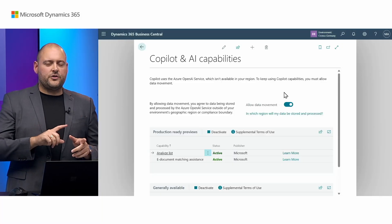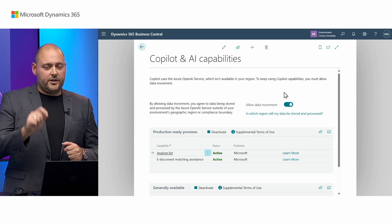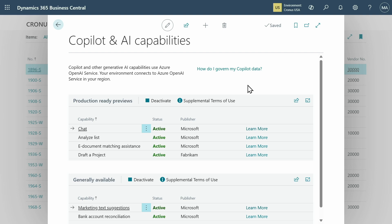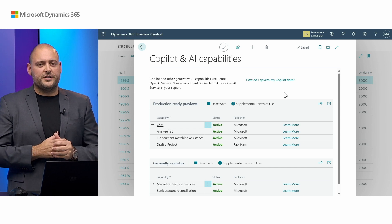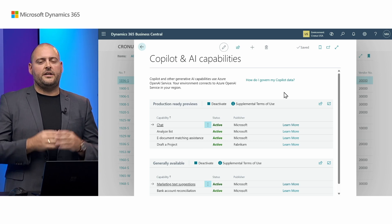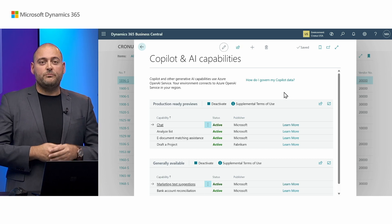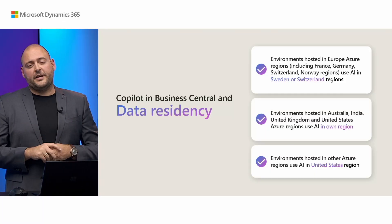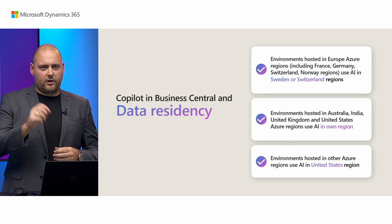When data flows across geographies, only a small amount of data moves out of your region — just the prompt and the response during your interaction with Copilot. This doesn't mean the entire database moves out of region; it's really a minimal amount. Contrast this with the US-based environment, where there is no switch to allow data movement, because Azure OpenAI service is available in that same region. US customers, as well as customers in India, Australia, and the United Kingdom, don't need to opt into anything — data remains within that region. Use the link below to see the full table of Azure region mappings.